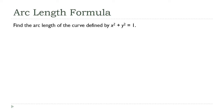If you remember, our arc length formula has a requirement that the first derivative of the function whose length we're trying to find has to be continuous on the interval we're looking at. So in this lecture, we're going to look at a couple of examples where that's not the case, and we'll see some ways that sometimes we can use to get around that.